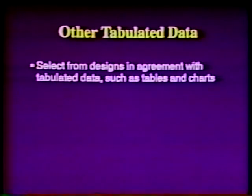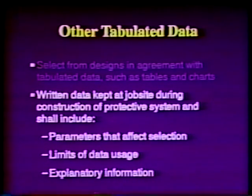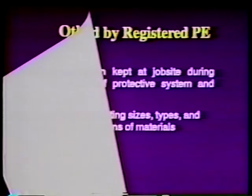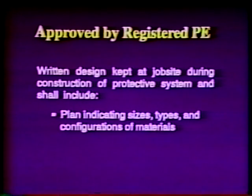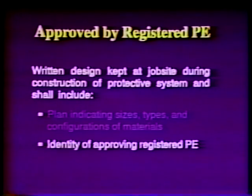The third option when choosing support, shield, or other protective systems is design using other tabulated data. The contractor may select from designs in agreement with tabulated data, such as tables and charts approved by a registered professional engineer. The written data are to be kept at the job site during construction of the protective system and shall include the parameters that affect system selection, the limits of data usage, and any explanatory information necessary to make the correct system selection. The fourth option is to use a design approved by a registered professional engineer. Such designs are to be written, kept at the job site, and include a plan indicating the size, types, and configuration of materials to be used, and the identity of the approving registered PE.